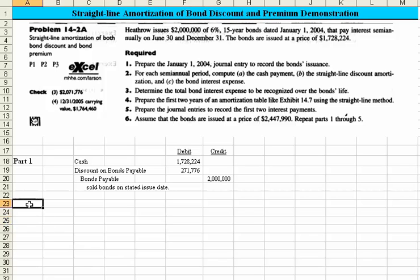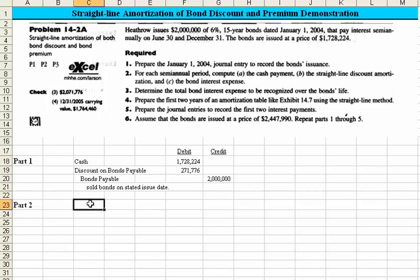Now let's take a look at Part 2. For the semi-annual period, we're asked to compute the cash payment, the straight-line discount amortization, and the bond interest expense.